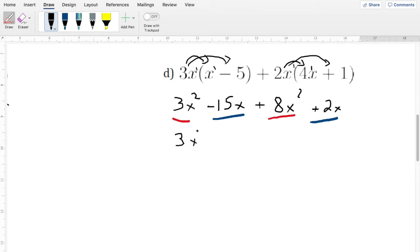So now, if I rewrite this, we have 3x squared plus 8x squared. So we're going to combine those two together. Then I'll combine the other two together. 15x plus 2x. So if we go over here, 8 plus 3 is 11x squared. And then 15 minus 2 is going to be 13. So it's going to be negative 13x. And there's our answer.